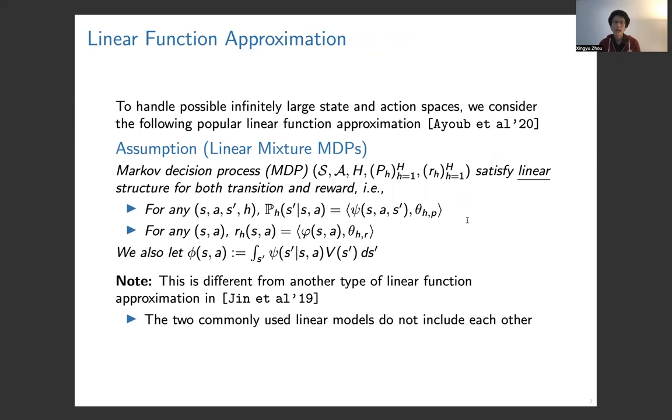In order to handle possibly infinitely large-scale states and actions, we consider the popular linear function approximation model. Roughly speaking, it says that both state transition and reward have a linear structure. Basically, it can be represented as an inner product with respect to some unknown parameter θ. This is different from a lot of types of linear function approximation. The two commonly used linear models do not include each other.